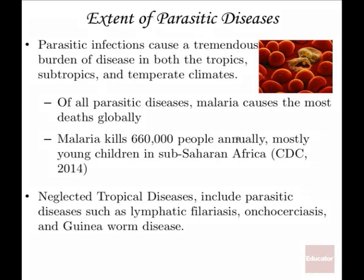Other parasitic diseases include some of the ones considered neglected tropical diseases. These are diseases designated as neglected by the WHO — infectious diseases that, while very widespread, do not receive a lot of research dollars. Some of these parasitic diseases include filariasis and guinea worm disease, and these are diseases that are widespread especially in the subtropics.